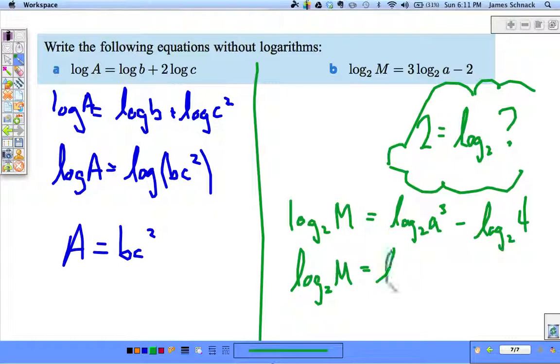Log base 2 of m equals log base 2 of a cubed over 4. And at this point the logs can disappear, they can go away. m is equal to a cubed over 4. And that concludes our work with laws of logarithms.